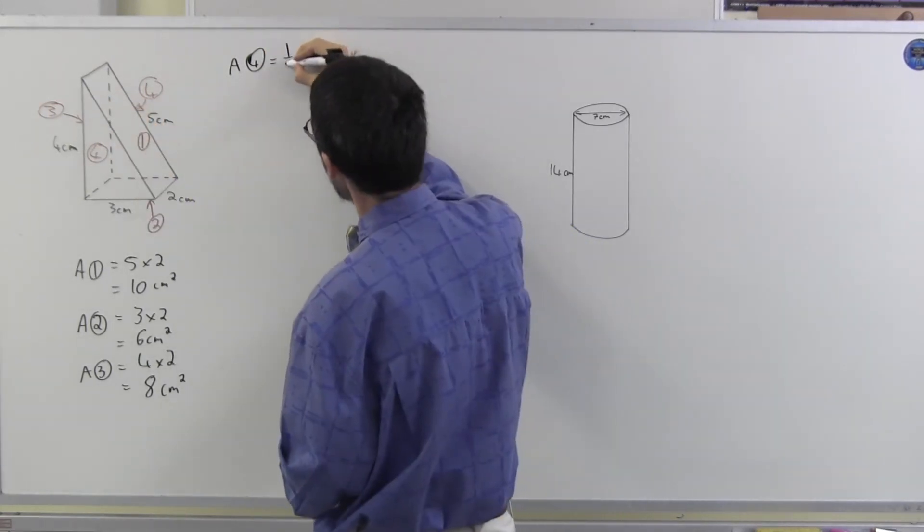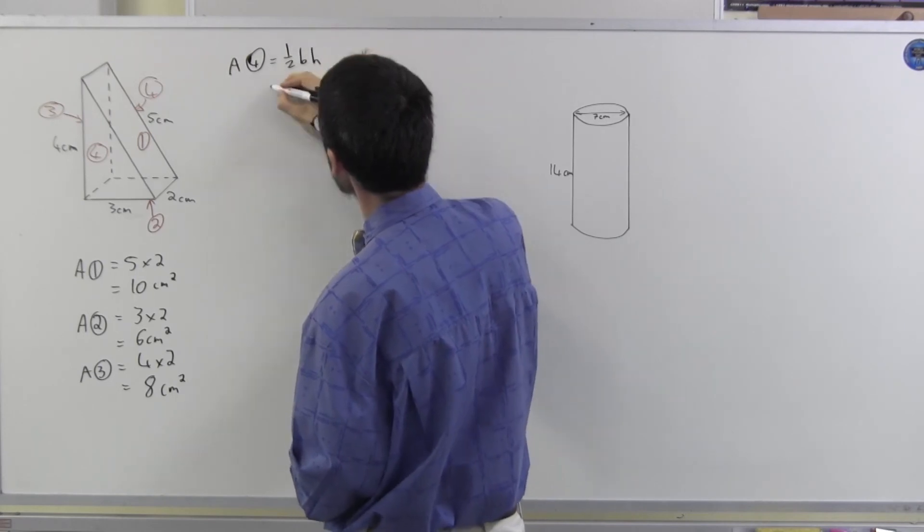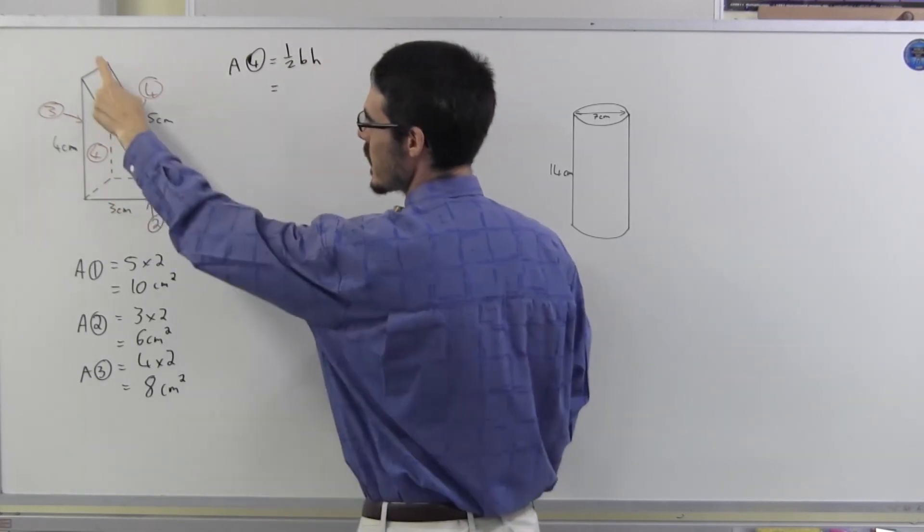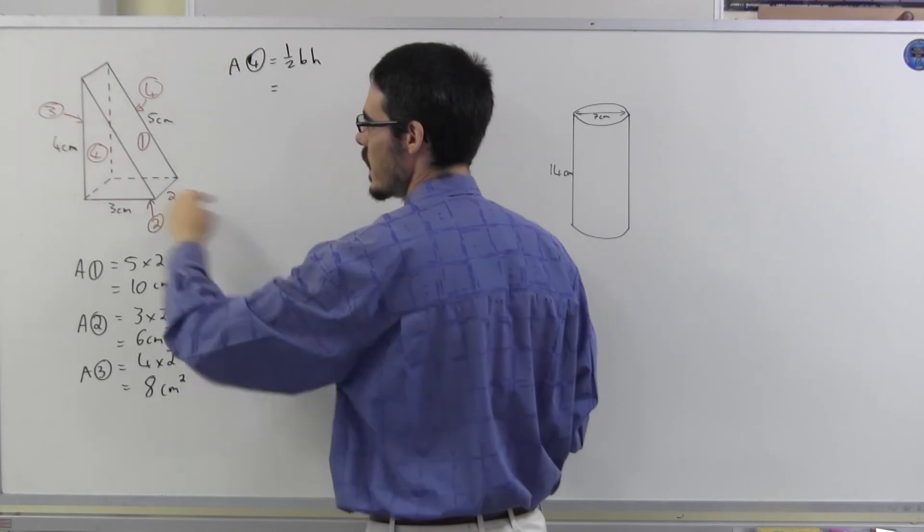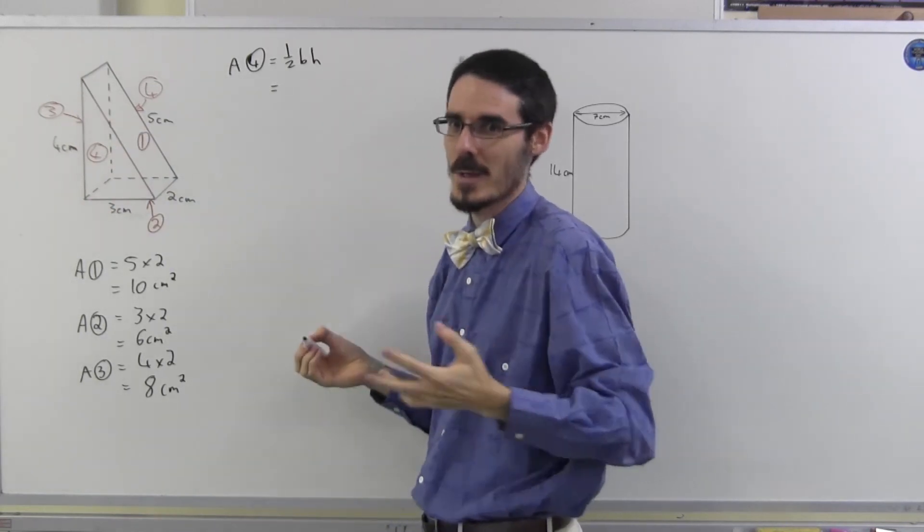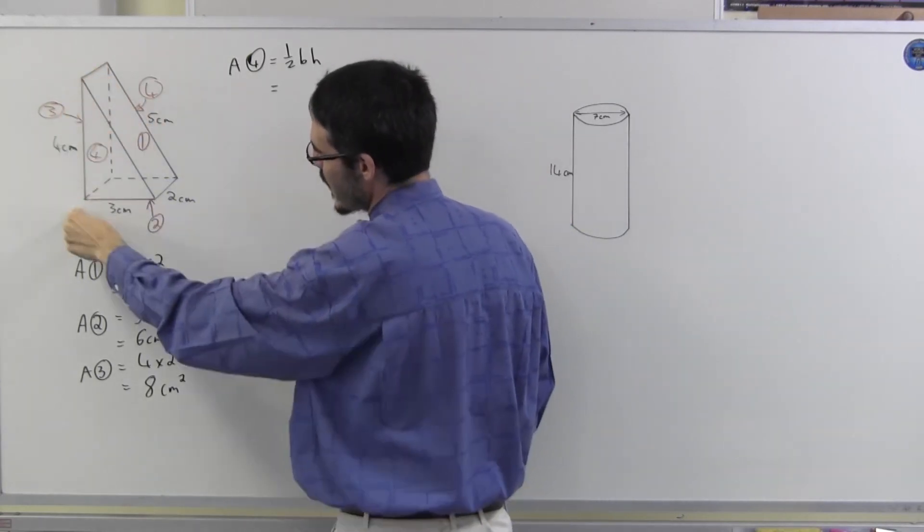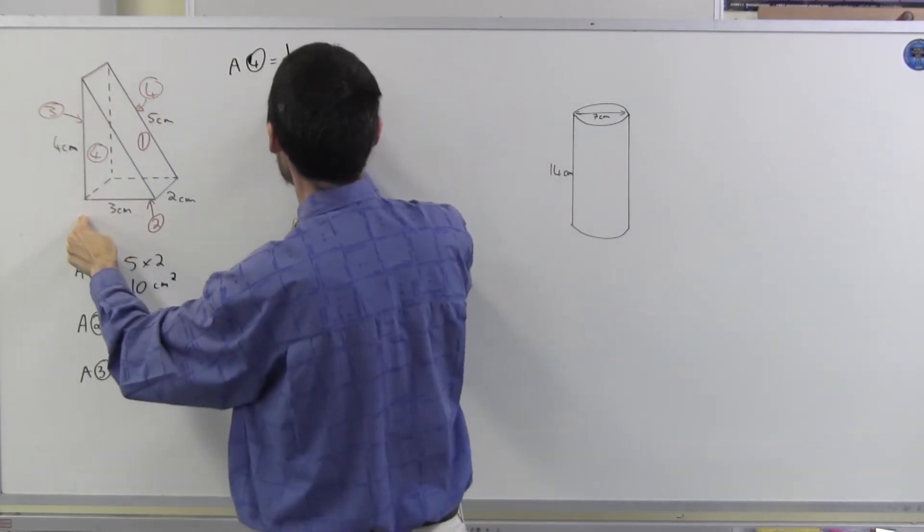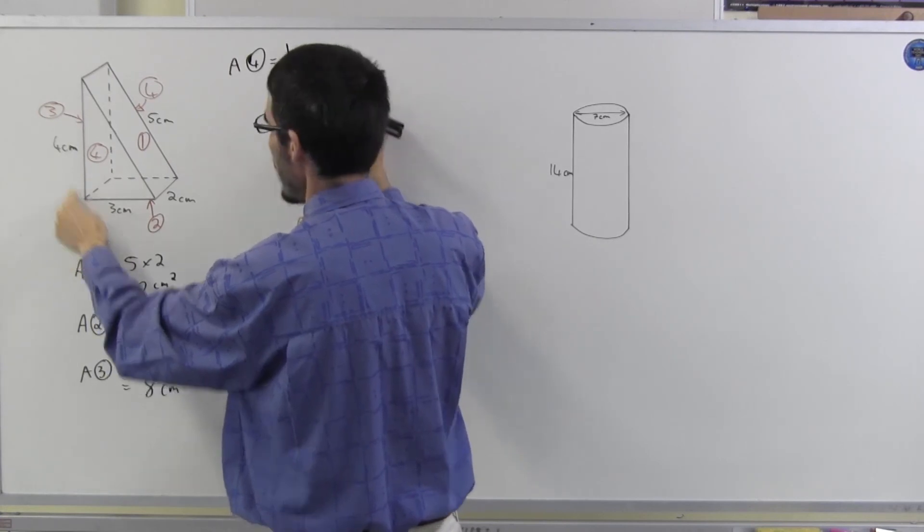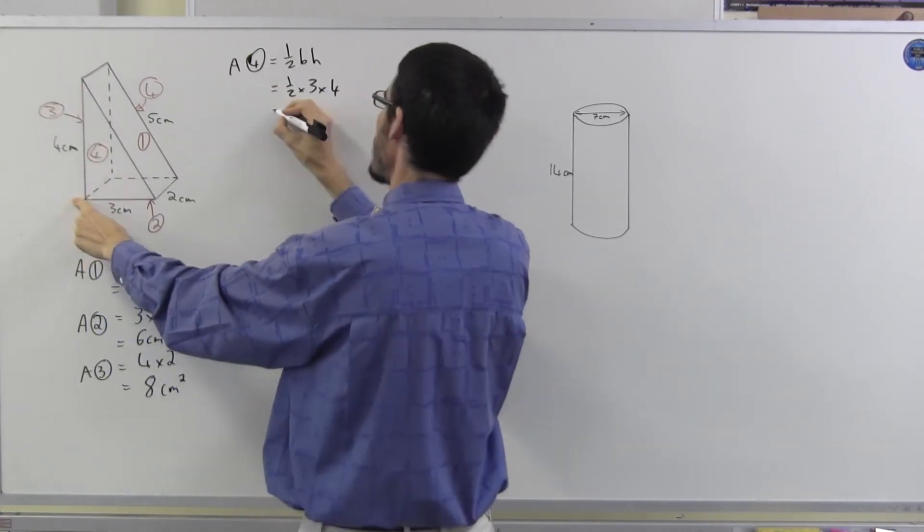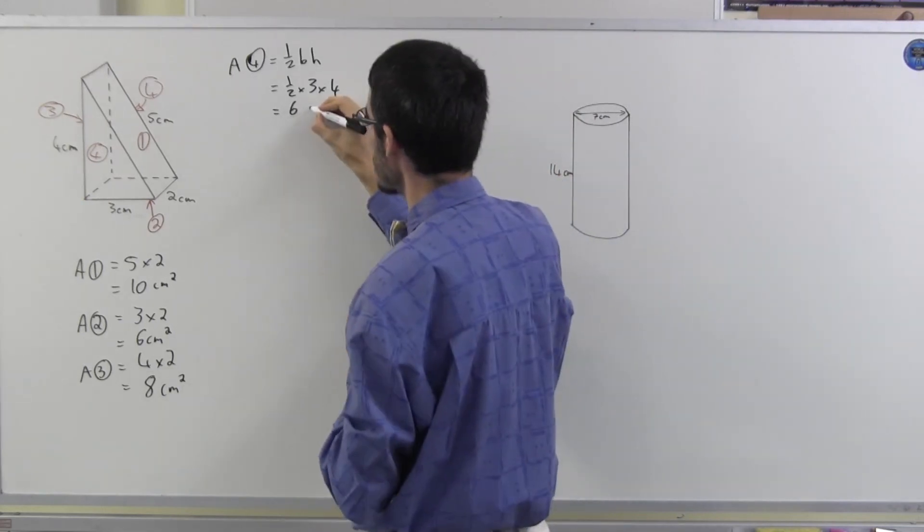And now I have the two triangles. Notice the way I'm labeling everything I'm doing, correlating the numbers on the diagram with the working I'm doing. It's just to help make it clear exactly what I'm working out. Four is a triangle, half base height. Well, this is a right angle triangle. Sorry, again, I didn't mark the right angle because I don't want to clutter the diagram too much. So the base is going to be three, and the height is four, half of twelve, which is six.